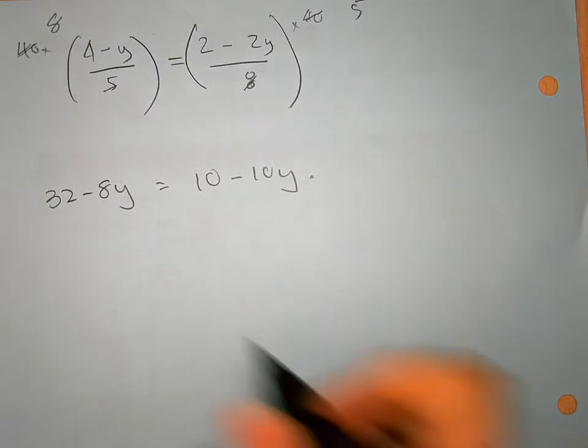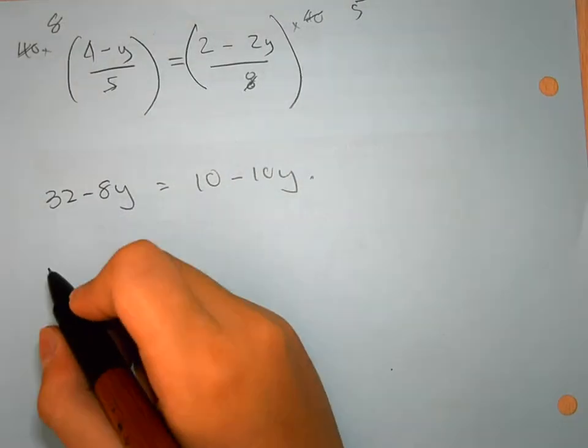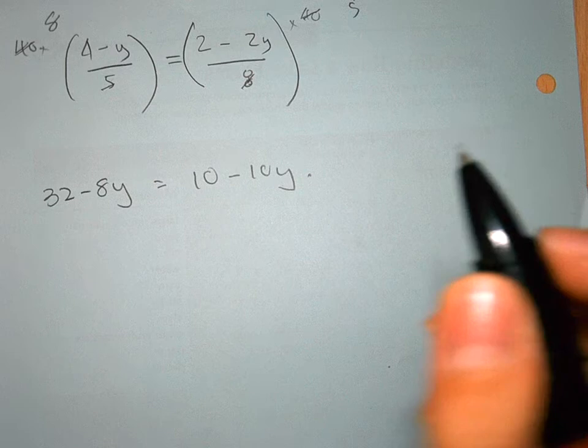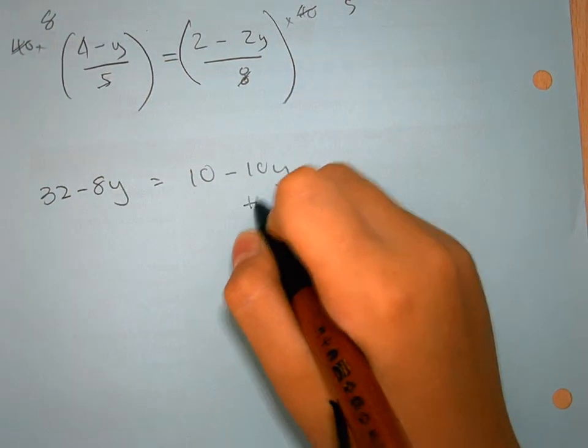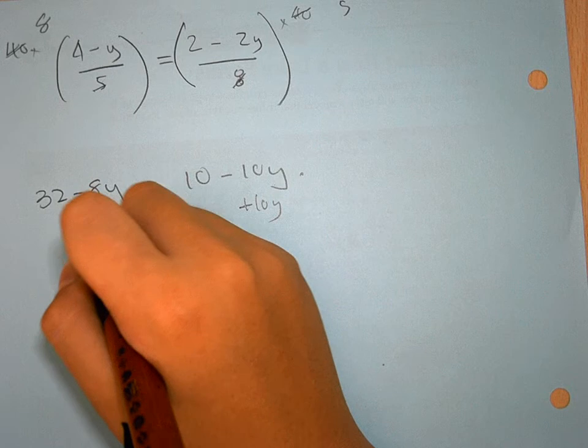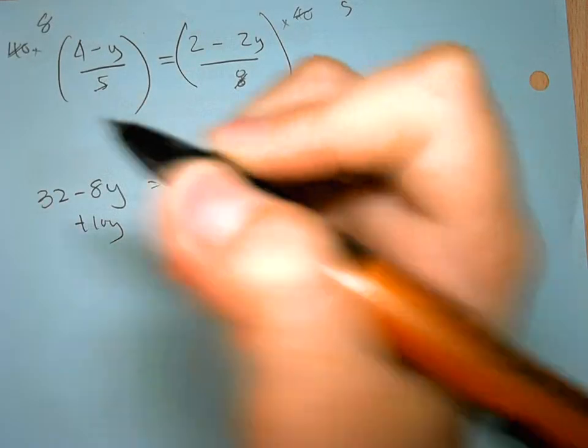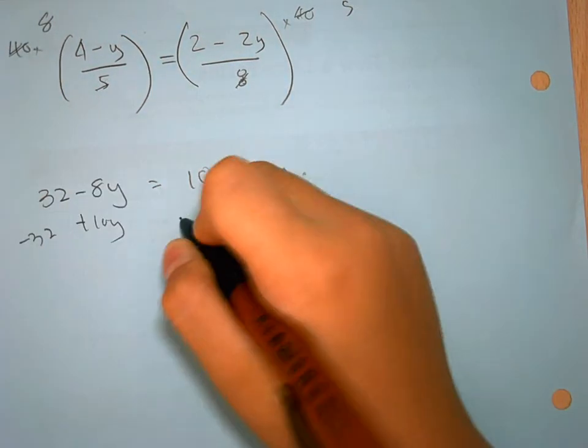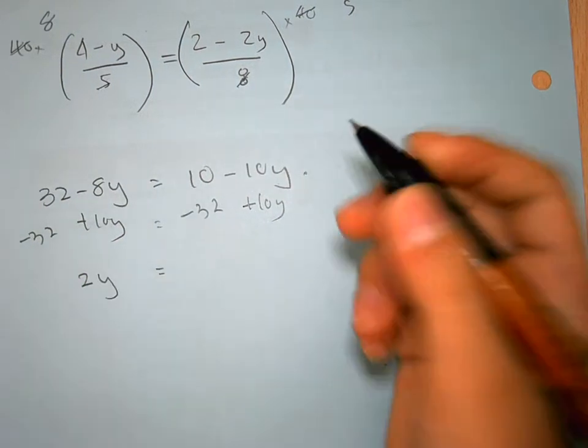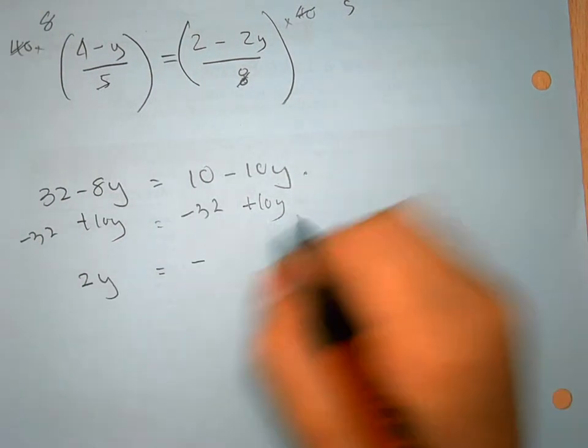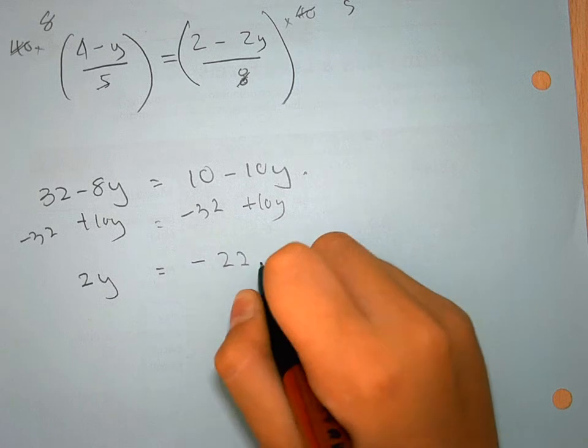So first, I need to balance this, so I'm going to use inverse operation. Plus 10y, minus 32, and minus 32. This equals 2y equals minus 22.